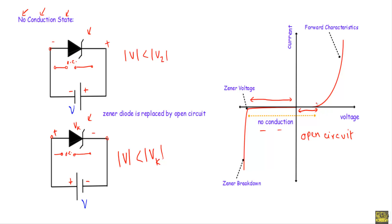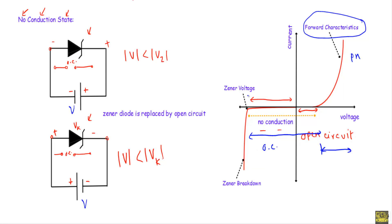From the IV characteristics, the Zener diode has three distinct regions: the forward bias region, where behavior is similar to a P-N junction diode; the non-conducting state, where the Zener diode is replaced with an open circuit; and the Zener breakdown region, where the applied reverse voltage exceeds the Zener voltage and the diode acts as a constant voltage regulator equal to Vz.